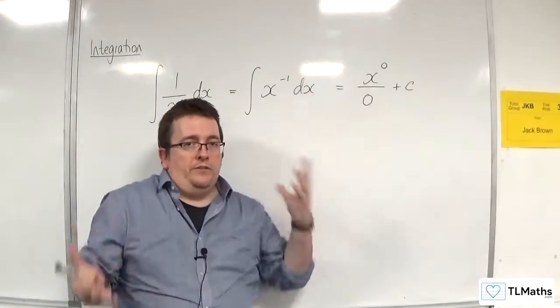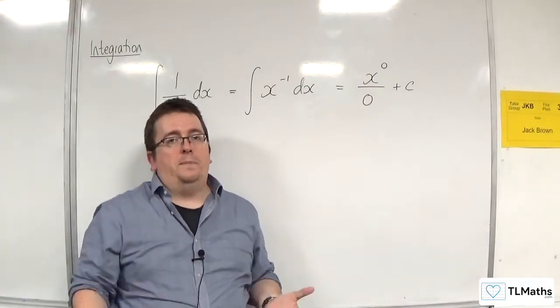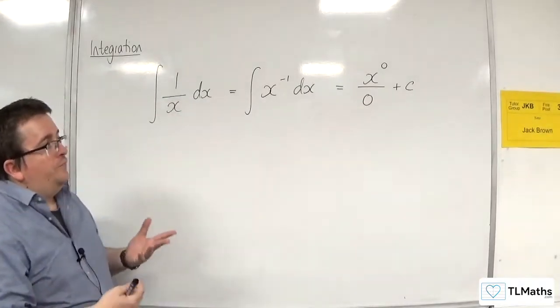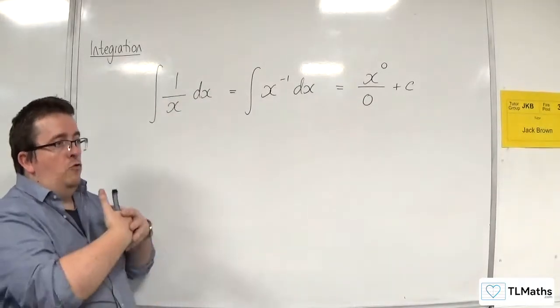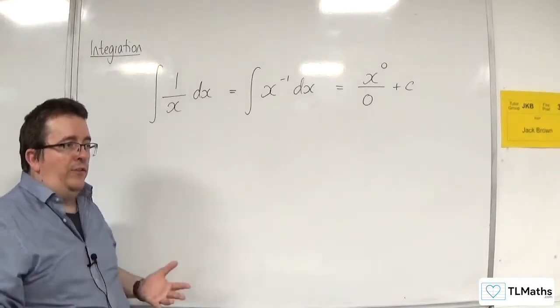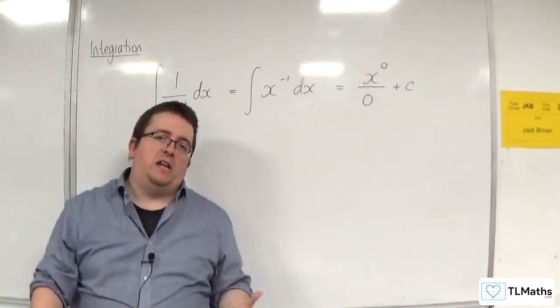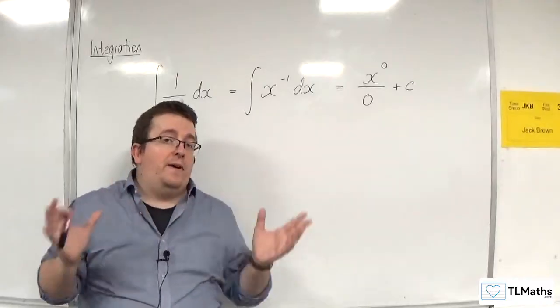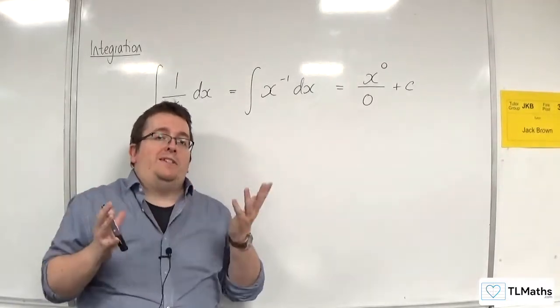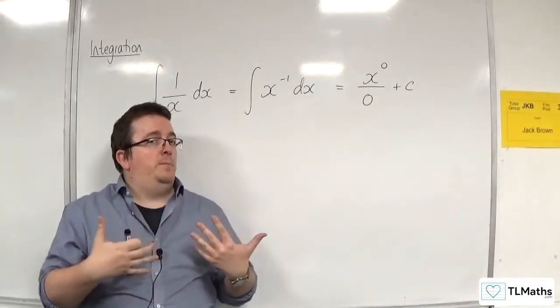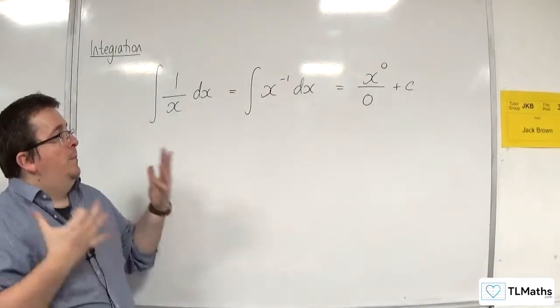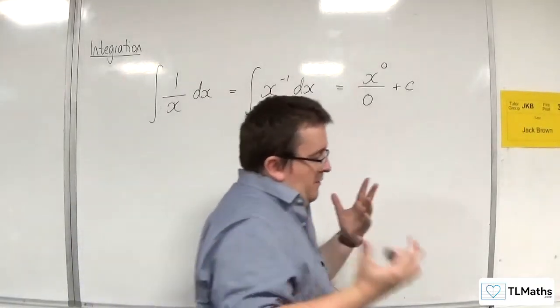But this, of course, is nonsense. We can't divide by 0. So the method and the rule that we've got breaks down for one particular example. For all other values of n, integrating x to the n by adding 1 to the power divided by the new power is perfectly fine. But in this one case, it fails.